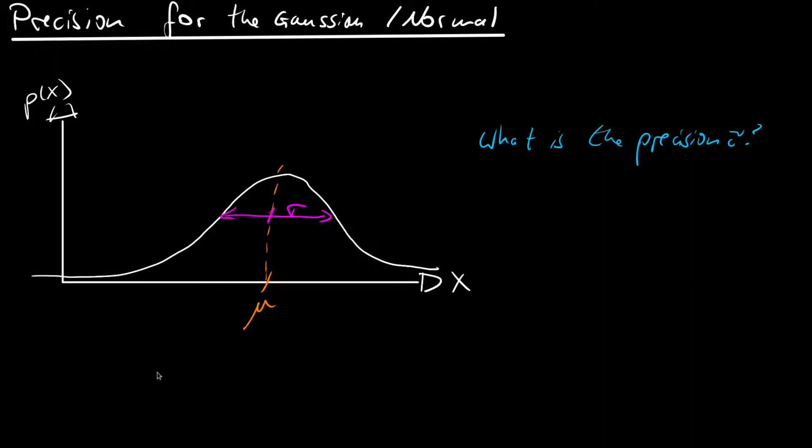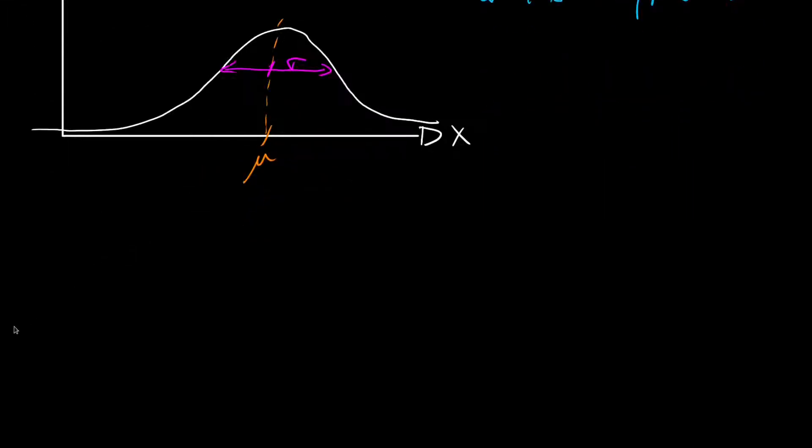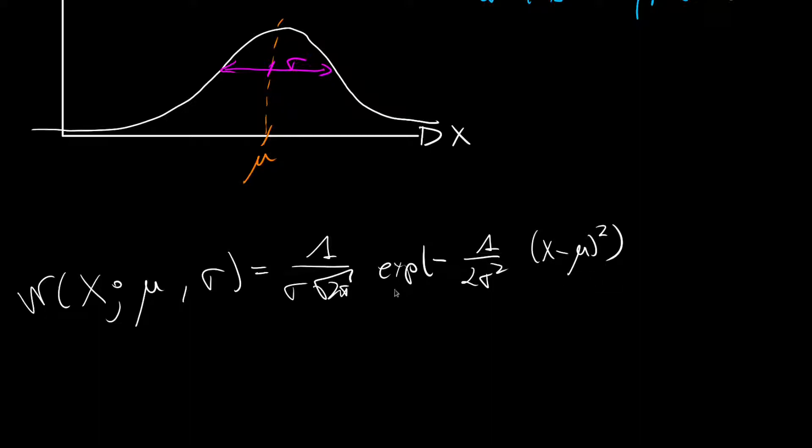For this let us note down all the possible definitions of the normal. So the first definition is the normal over the random variable x under given mu for the mean and sigma for the standard deviation. And then we have the form 1 over sigma times square root of 2 pi times the exponential of minus 1 over 2 sigma squared in brackets x minus mu squared.